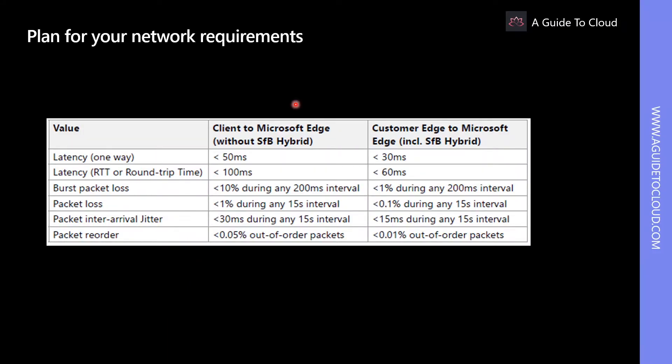When evaluating the existing network environment, hard limitations such as blocked IP addresses, faulty name resolution through DNS, and blocked ports are fast to surface because certain Teams features will simply not work at all when IP addresses or ports are closed. Discovering bandwidth, latency, or packet loss issues is more complicated because they may appear only under special circumstances.